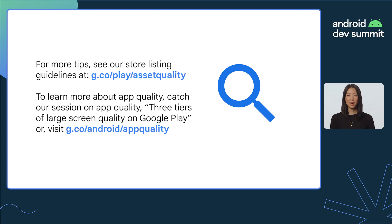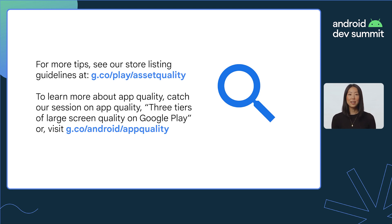Here at ADS, we're hosting a session on large-screen app quality called Three Tiers of Large-Screen Quality on Google Play. If you can't make it, you can always check out our app quality guidelines for all form factors at g.co/android/appquality. Thanks for joining us and for being a part of the Google Play community.